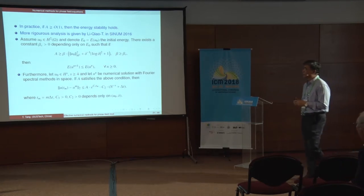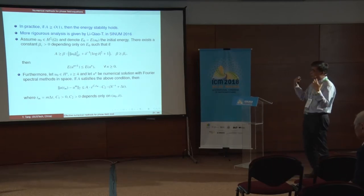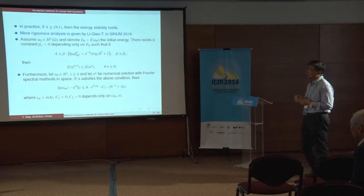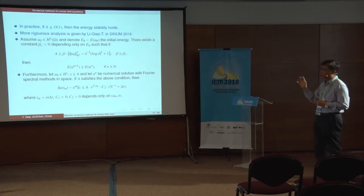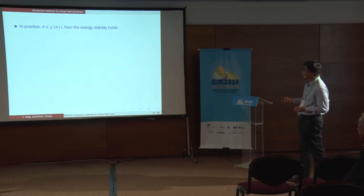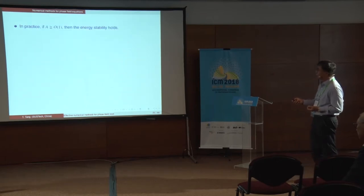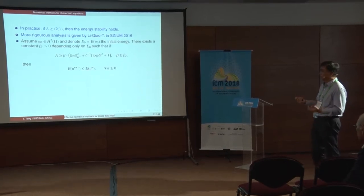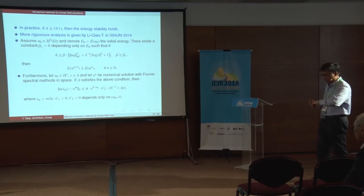To summarize, we have various methods for phase field models. The lower-order method works well for most of the time. For specific places, we can add stabilization terms — similar to Eyre's method — to theoretically guarantee energy stability. With some smoothness assumption on initial data, we can also obtain convergence results.